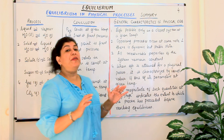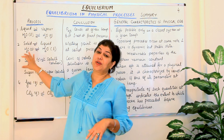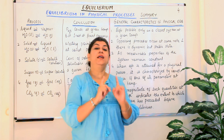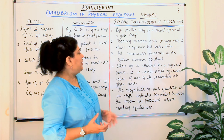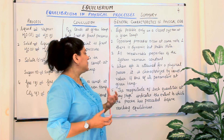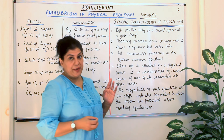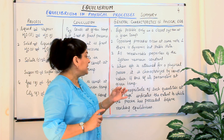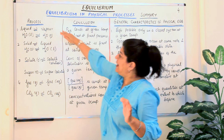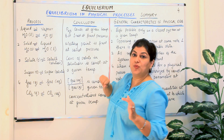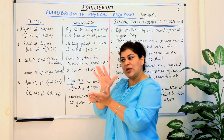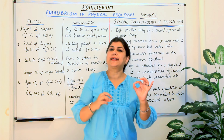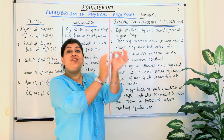All measurable properties of the system remain constant when equilibrium is established — concentrations of reactants and products, pressure, and temperature all become constant. When equilibrium is attained for a physical process, it is characterized by a constant value of one of its parameters at a given temperature. In all these equilibria, either the pressure or the temperature was constant, and that characteristic parameter defines the equilibrium.